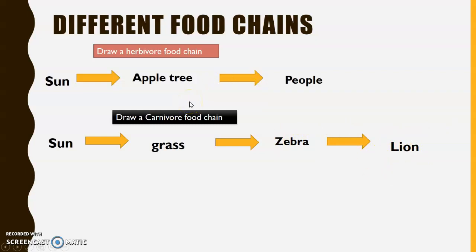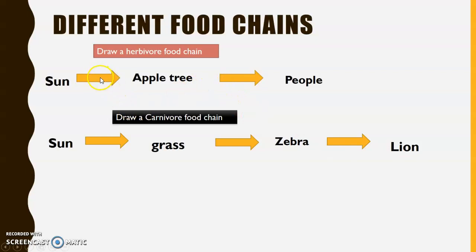Please be aware that when a question says 'draw,' I didn't draw a picture of a sun, an apple tree, or a human being — because it would be difficult for your teacher to see that it's a human being or a zebra. When they say 'draw,' they are not saying draw a picture. They mean draw arrows showing the energy flowing from the sun to a plant, to an animal, or to a person, depending on what the question asks.